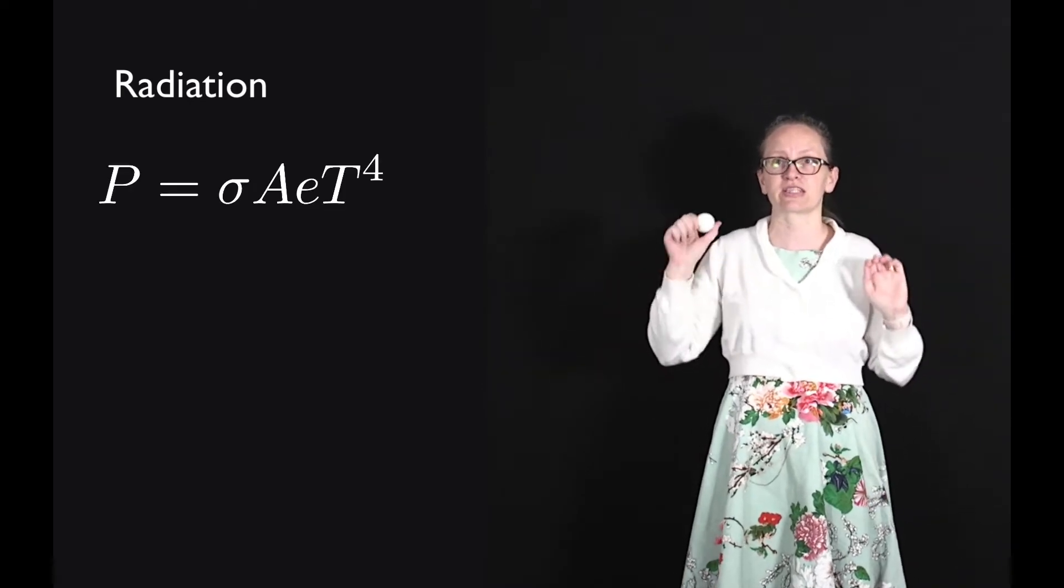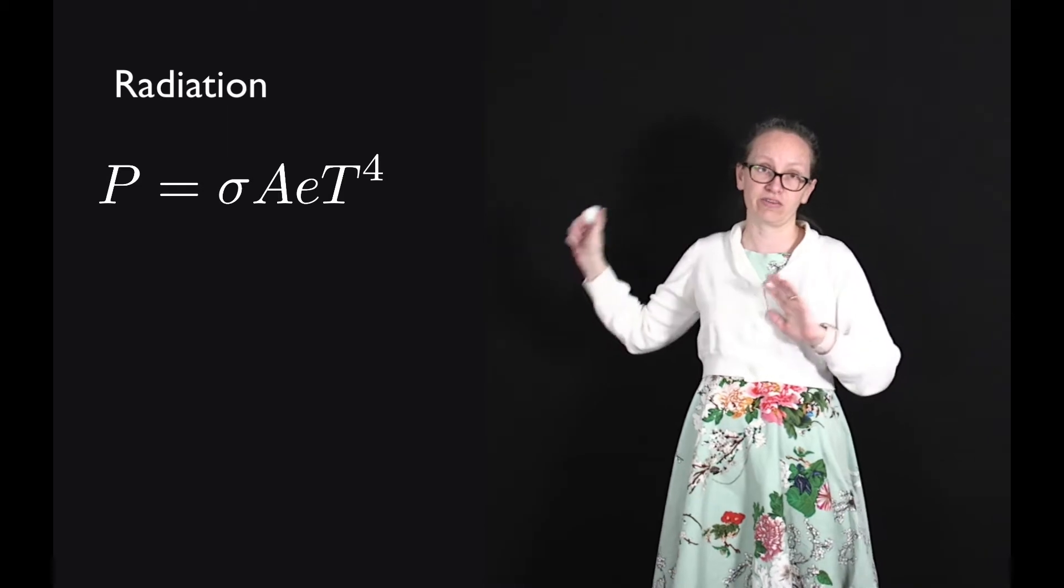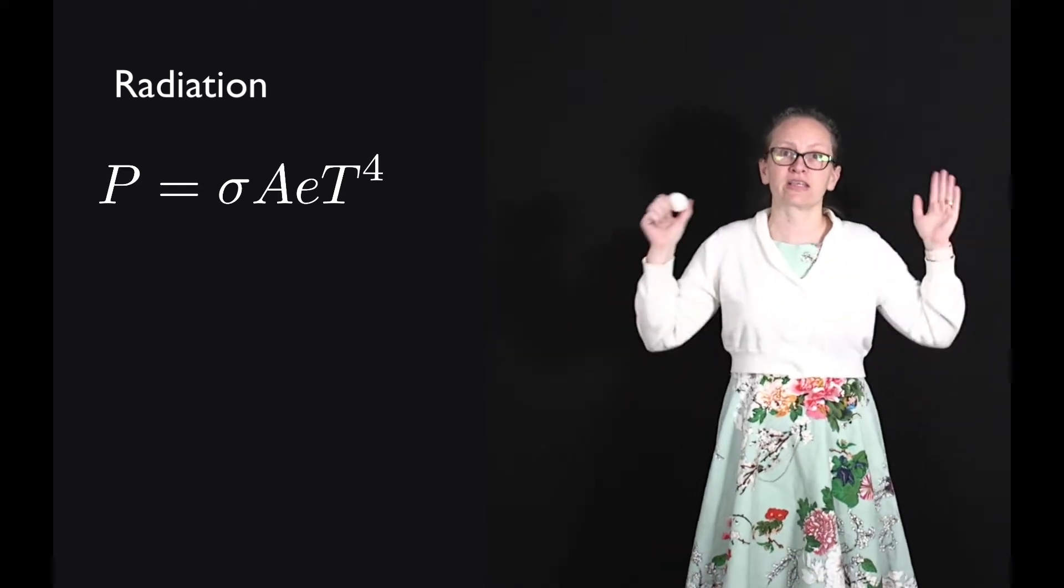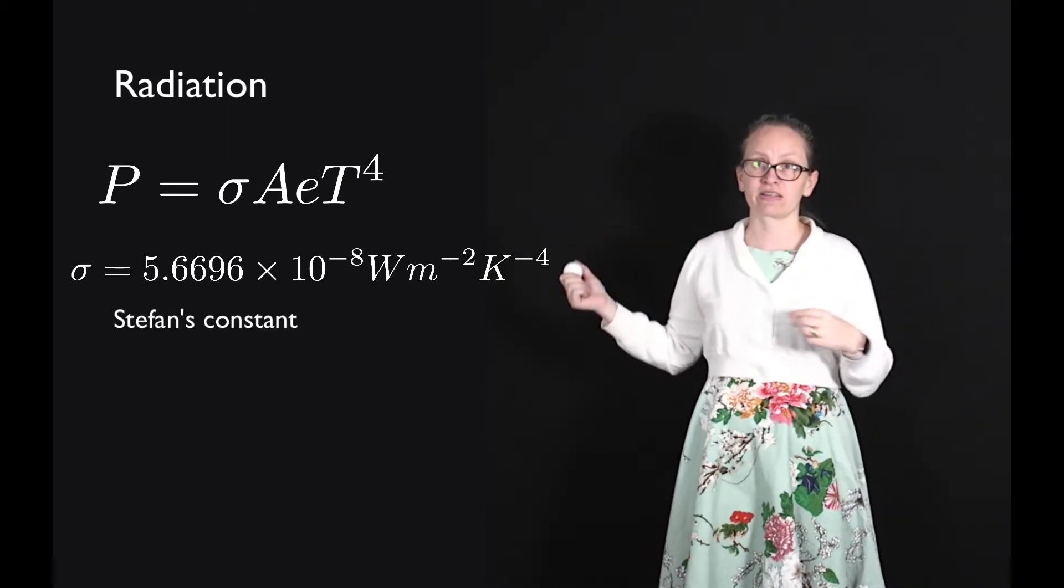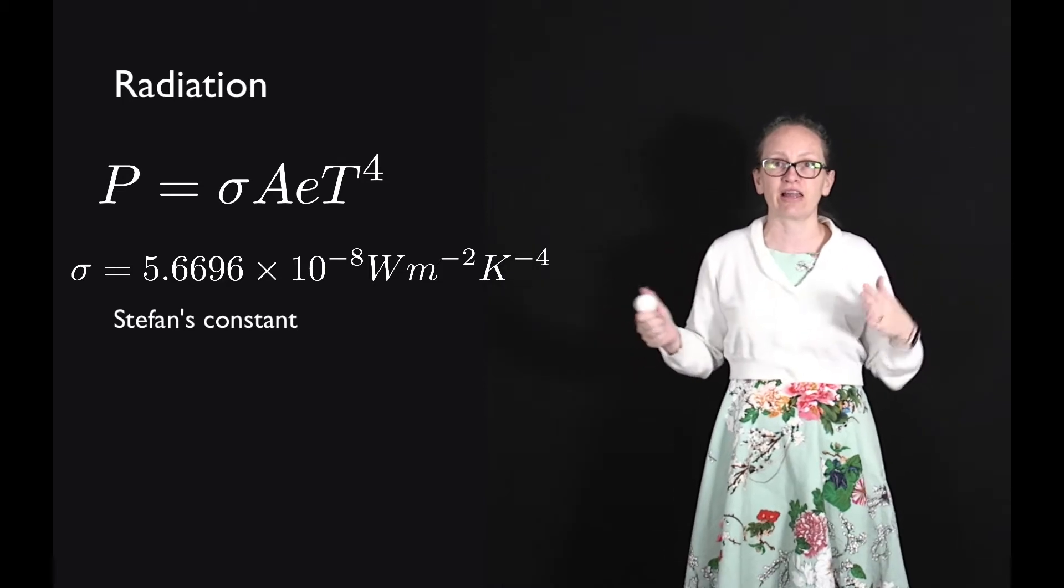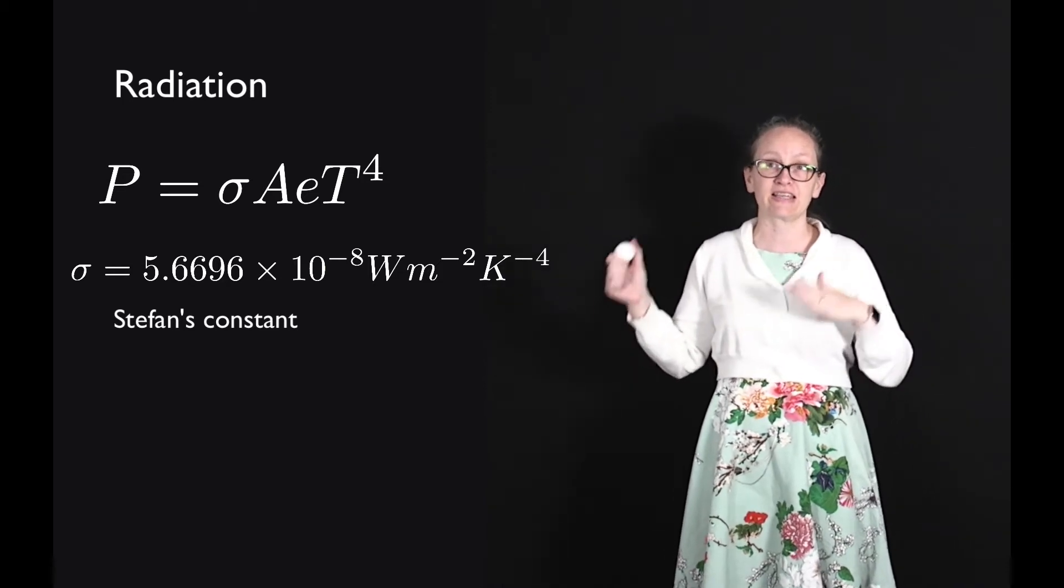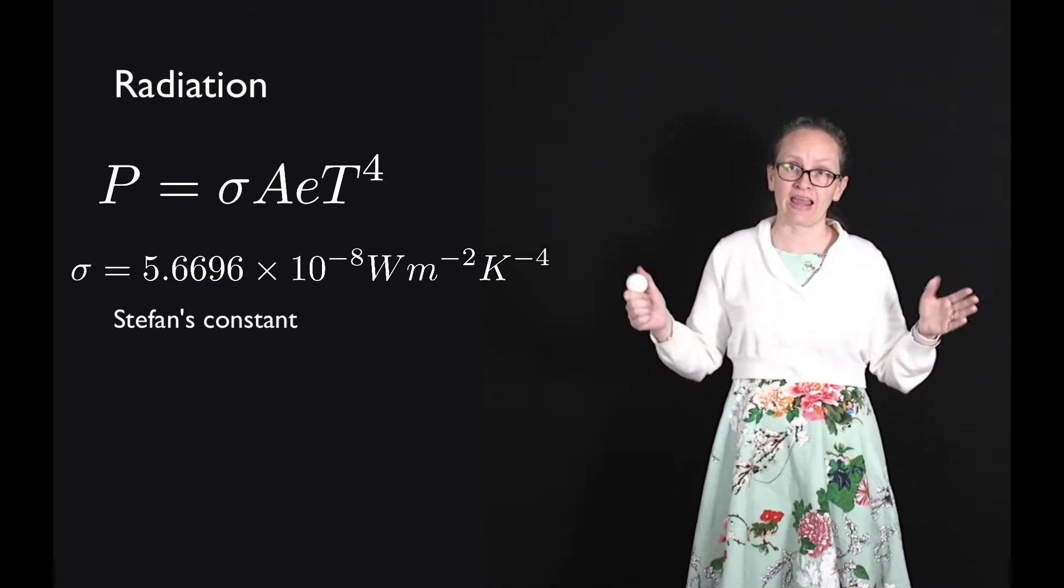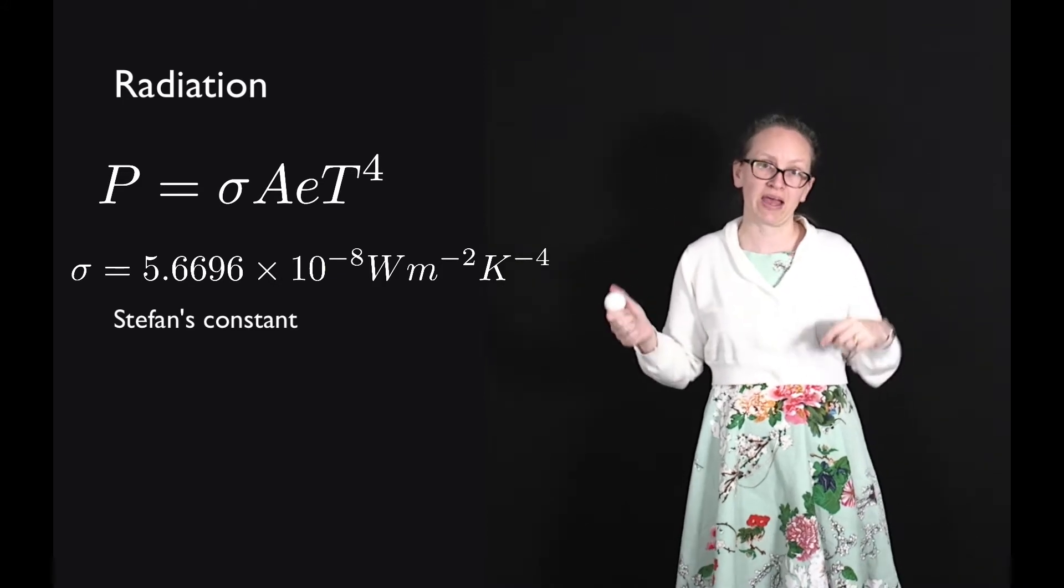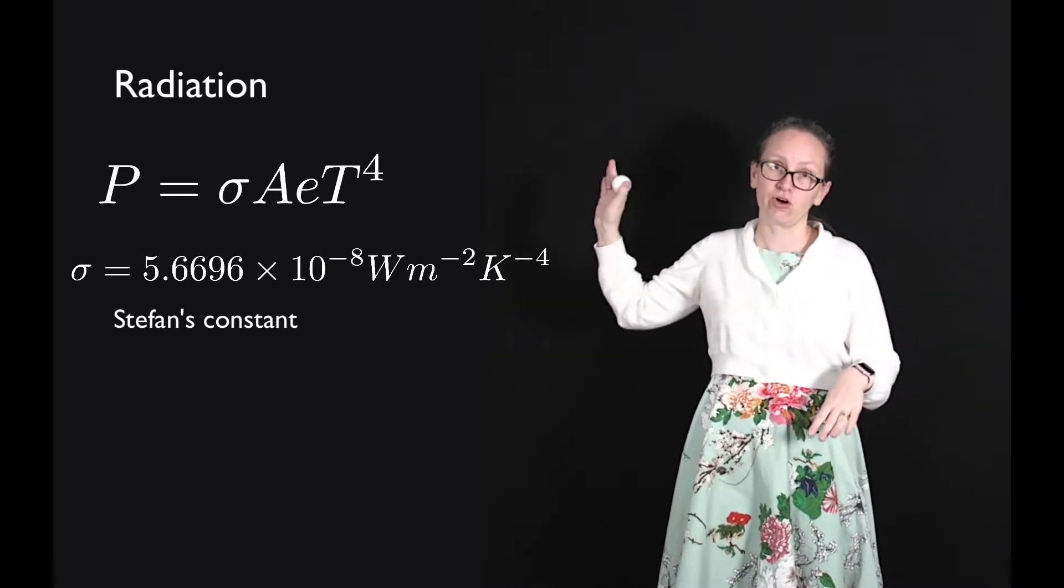The equation for heat transferred through radiation is P equals sigma A e T to the 4. In this equation, sigma is Stefan's constant and has a value of 5.6696 times 10 to the minus 8 watts per meter squared per Kelvin to the minus 4.